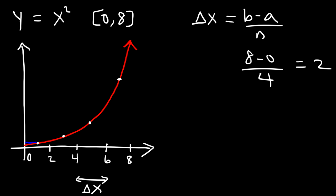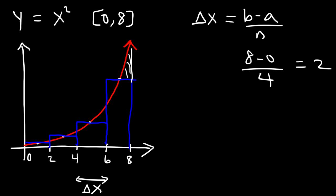We draw a rectangle where the curve intersects each midpoint, so a portion of the rectangle will be outside the curve and a portion will be inside. The midpoint rule calculates the area of those four rectangles to approximate the area under the curve from 0 to 8. It is a better approximation than using left endpoints or right endpoints.